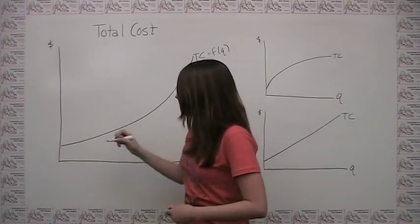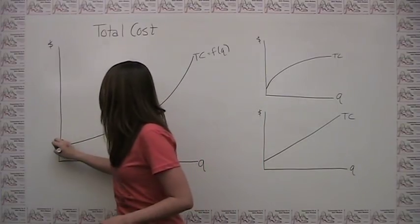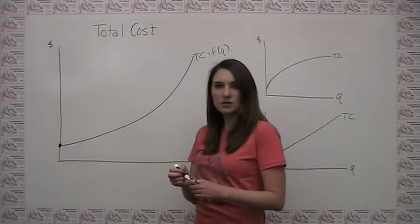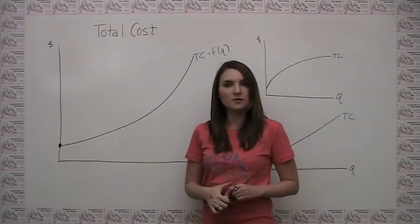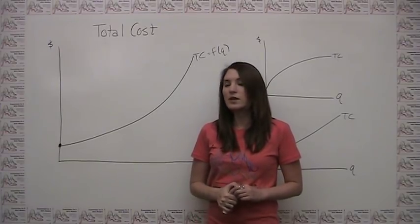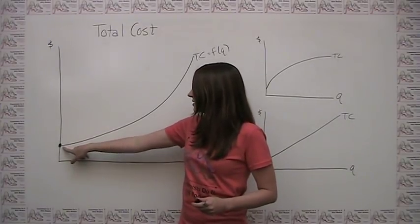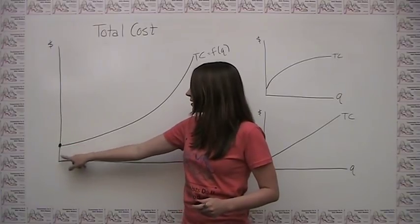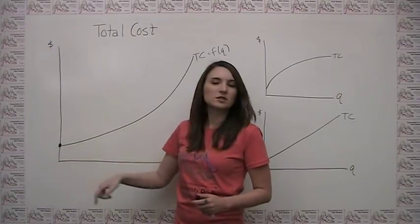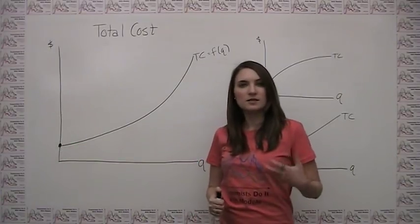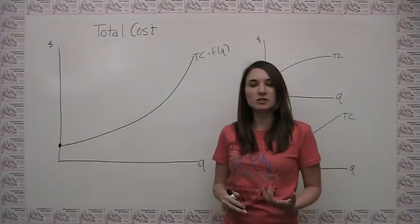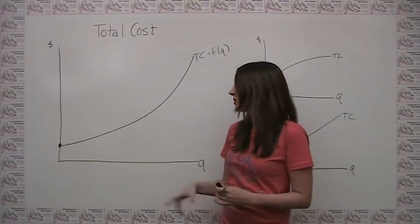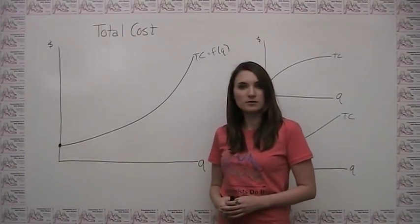You'll also notice that total cost doesn't start at a total cost of zero. The reason for that is that this initial point at a quantity of zero represents the fixed costs of production, which are present even if the production quantity is in fact zero.